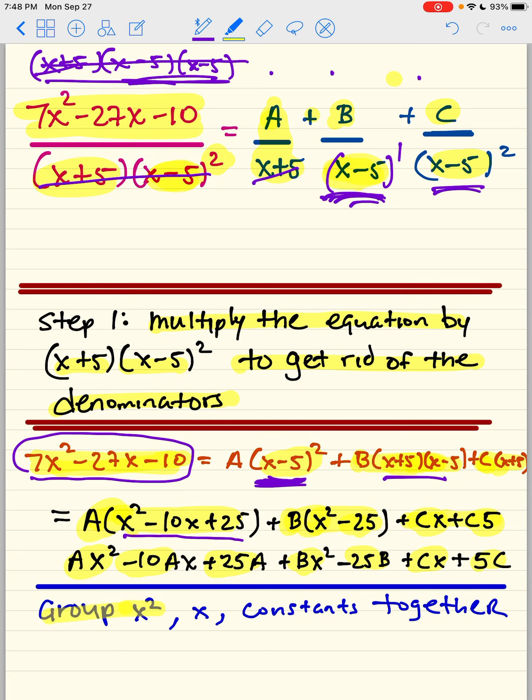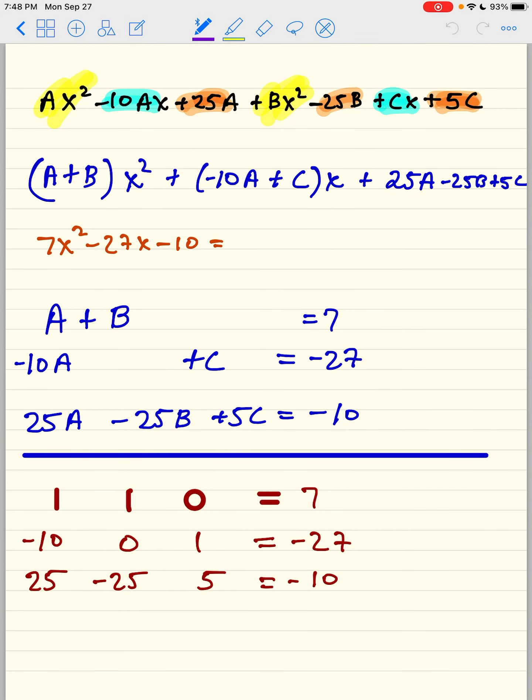Now what I'm going to do is I'm going to group the x squares, the x, and the constants together because what I want to do is I want to try to match up these numbers. So I'm going to just take this here. It's from the previous page, and you can always pause the video. The yellow highlighted go together because they both have x squared. I factor out the x squared, and I'm going to have A plus B.